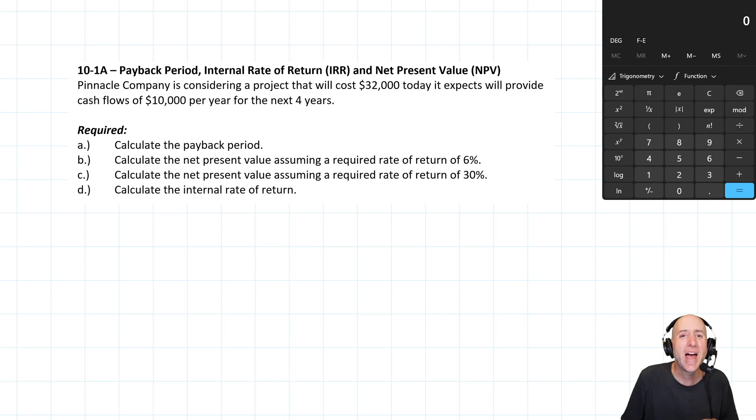Let's run through problem 10-1A. We'll be doing payback period, internal rate of return, and net present value. Pinnacle Company is considering a project that will cost $32,000 today, and it expects will provide cash flows of $10,000 per year for the next four years. Alright, so we're putting out, let's actually draw a number line here. So I put Y0 as in now, time zero.